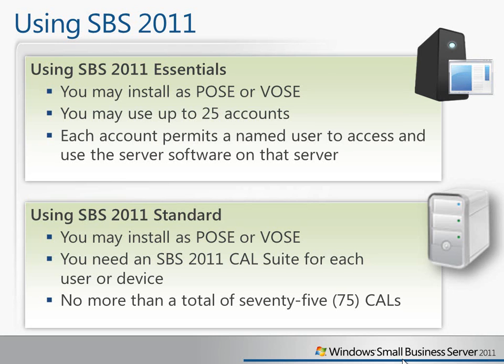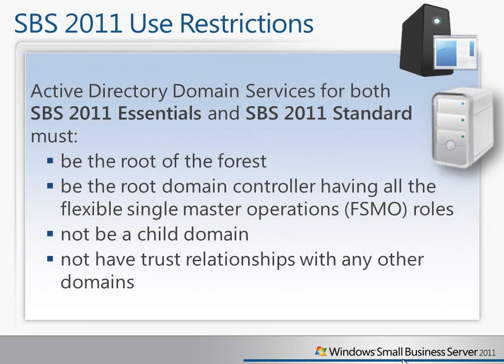In contrast, SBS 2011 Standard uses the CAL model, which you may be familiar with from previous versions of SBS or Windows Server Standard. You need to assign a CAL to each user or device, and like previous versions of SBS, you can have no more than a total of 75 CALs. You can run Standard as a physical machine or a virtual machine.